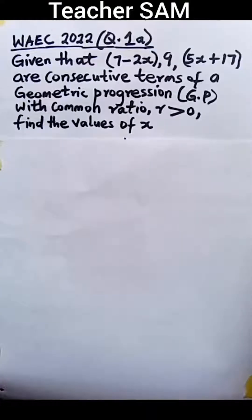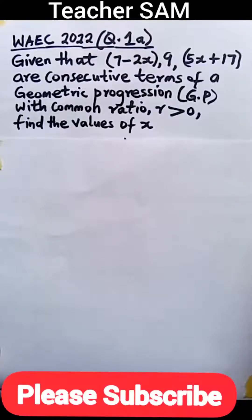Question 1a. Given that 7 minus 2x, 9, and 5x plus 17 are consecutive terms of a geometric progression GP with common ratio r greater than 0, find the values of x.